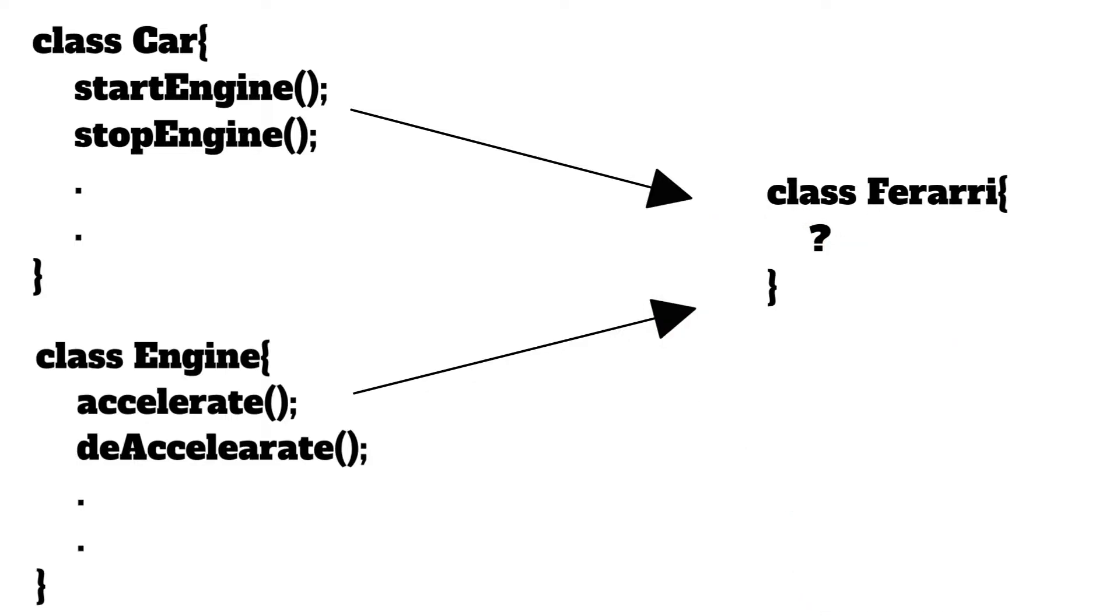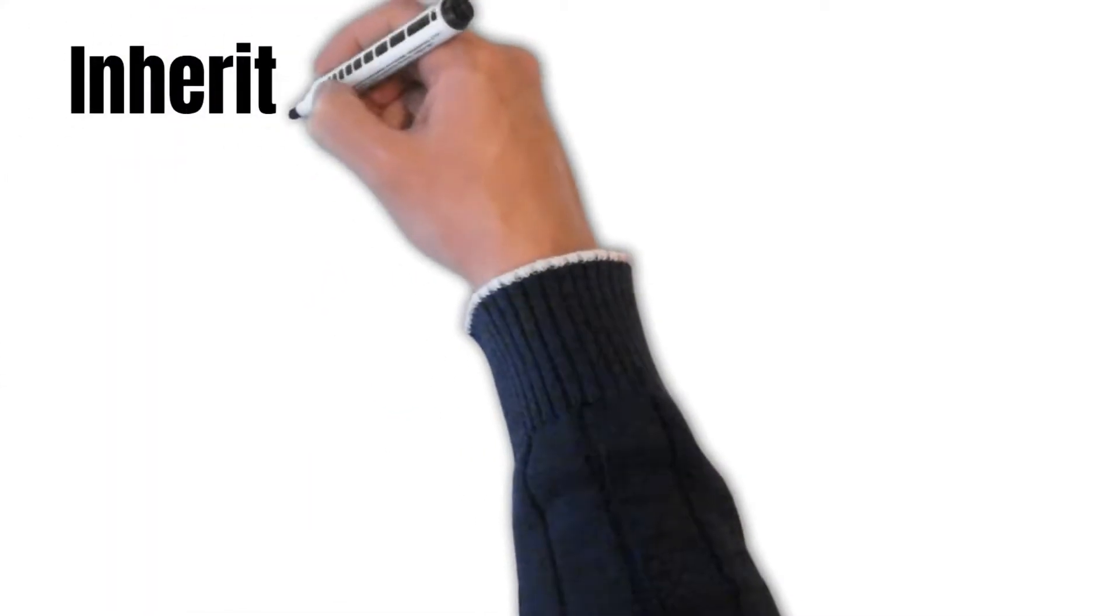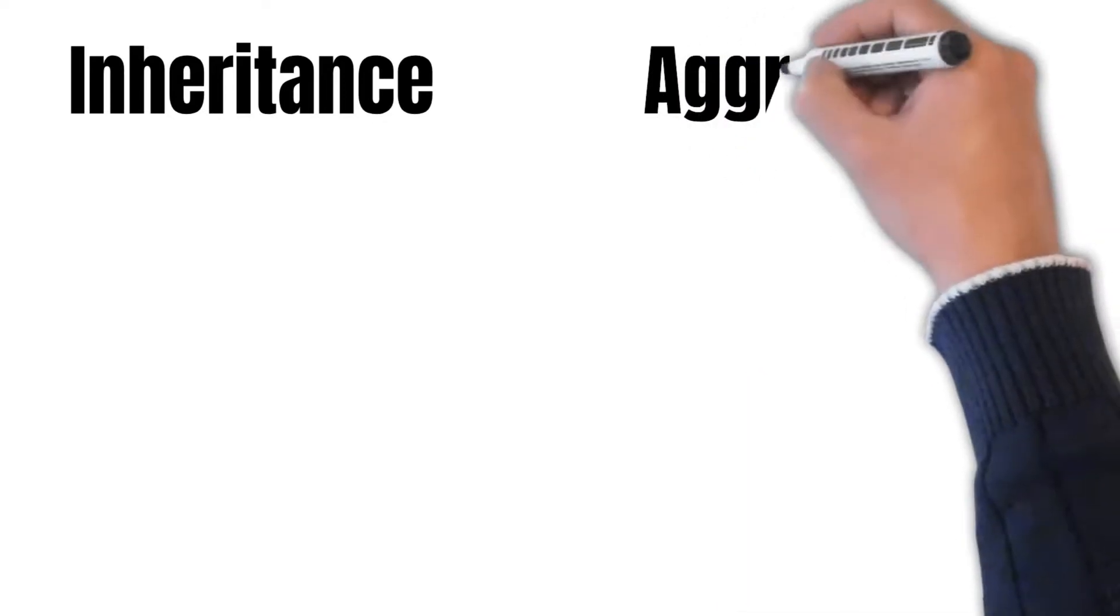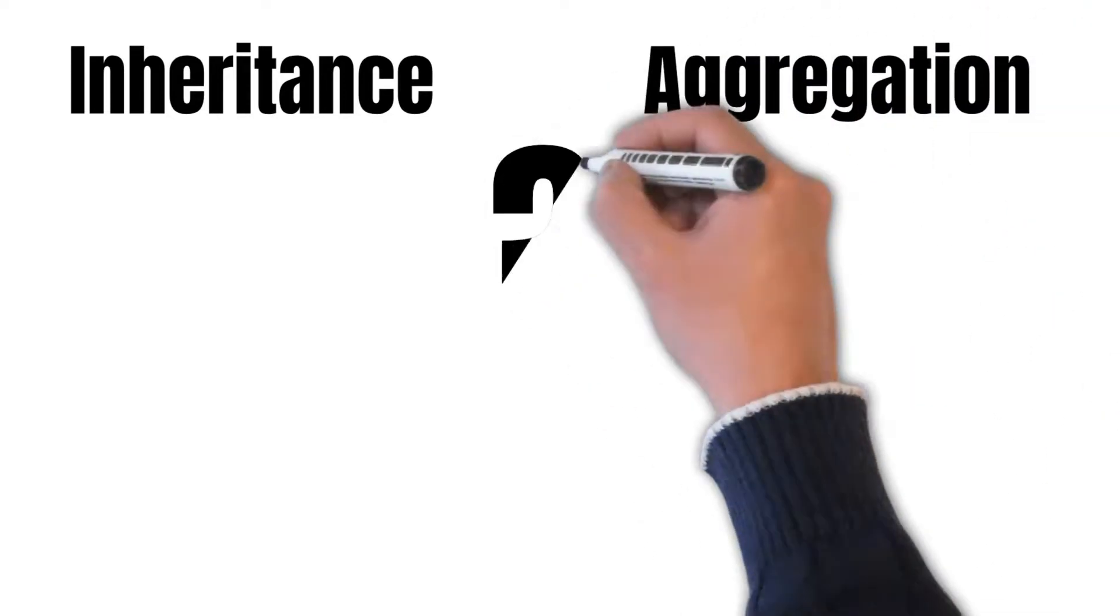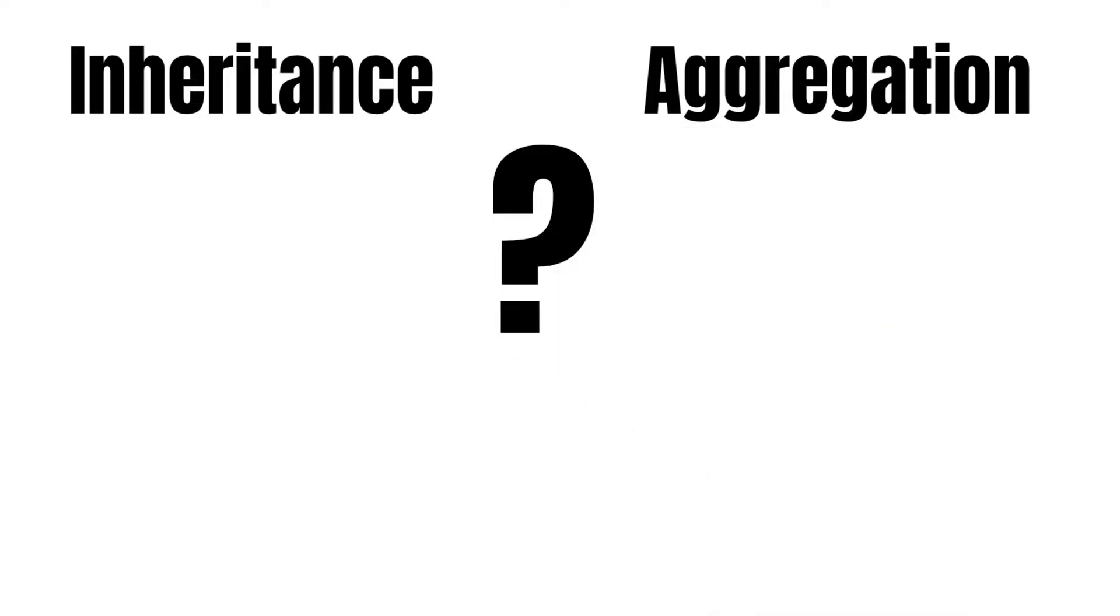What will be the relation of these classes with our Ferrari class? We have two options here: we can use inheritance and we can also use aggregation. So when to use inheritance and when to use aggregation is the important question here.